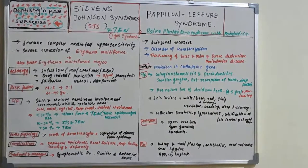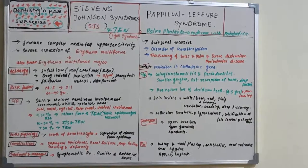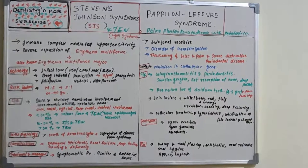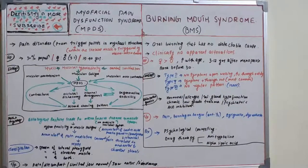So far we have covered Frey's syndrome, Gorlin-Goltz syndrome, Plummer-Vinson syndrome, Down syndrome, Stevens-Johnson syndrome, and Papillon-Lefèvre syndrome. More syndromes will be covered in upcoming sessions.